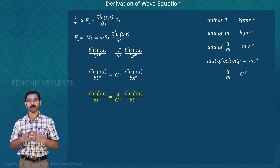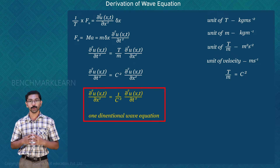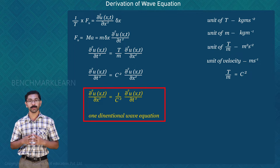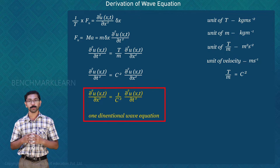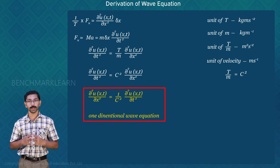Finally, we obtain the partial differential equation known as the one-dimensional wave equation. For easy notation, using u for u(x, t), it is written as ∂²u/∂x² = (1/C²) · ∂²u/∂t². In some problems, the displacement function may be given as y(x, t) instead of u(x, t); in such cases, we simply replace u with y in the wave equation.